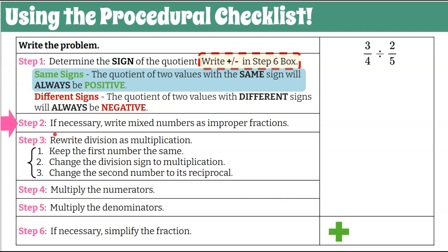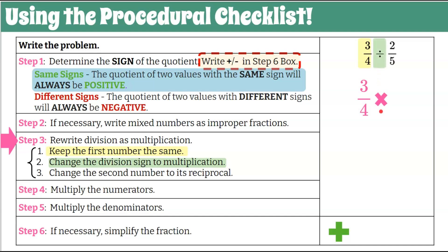Step two: if necessary, write mixed numbers as improper fractions — not necessary here, both are proper fractions. Step three: rewrite division as multiplication. We keep the first number the same — three-fourths. We change the division sign to multiplication. And we change the second number to its reciprocal: two-fifths becomes five-halves. Noting that two-fifths times five-halves equals one.